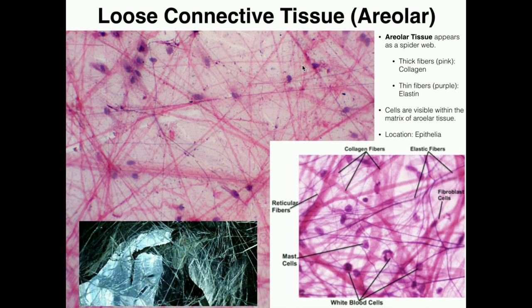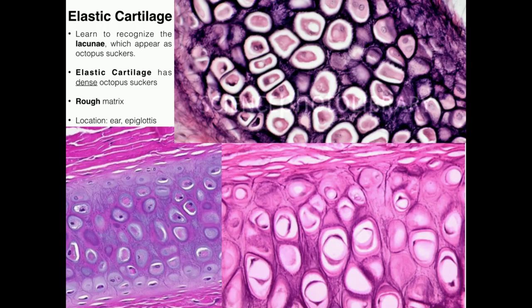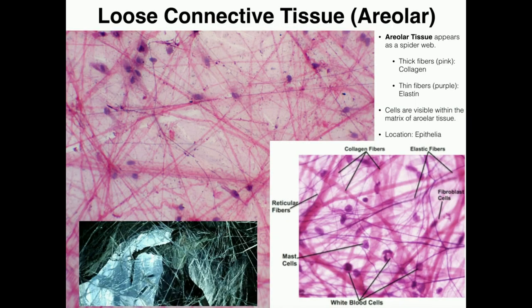Areolar tissue is one of these tissues where you have some things you need to know. First of all, these very thick pink fibers — like right where my mouse is — those are called collagen fibers. Your textbook calls them collagenous fibers; you can use either term. I always call them collagen. That's how I learned it.